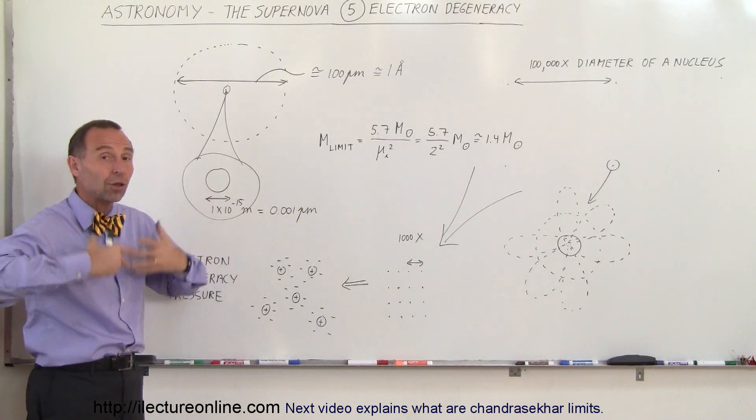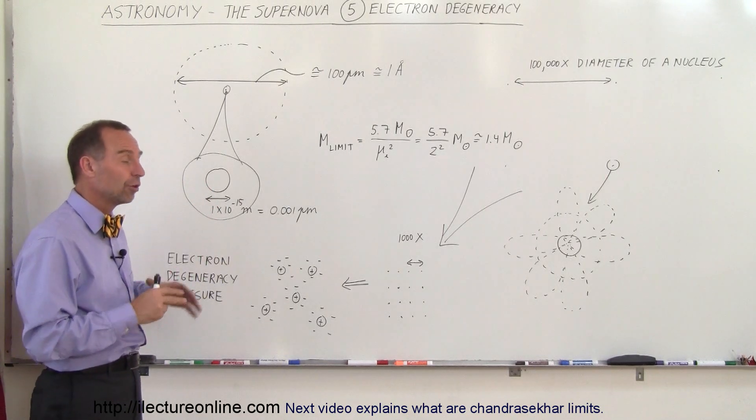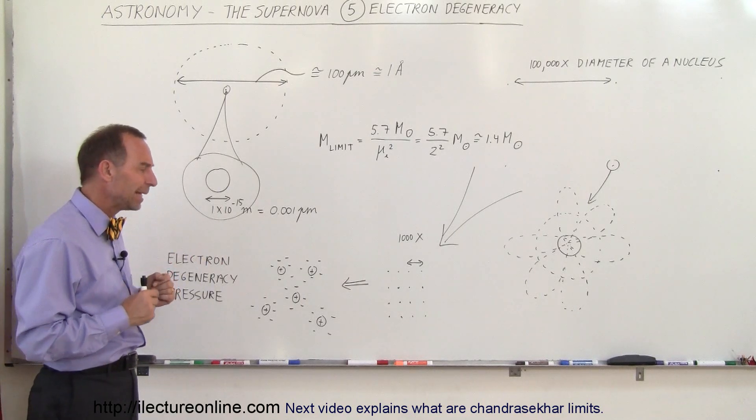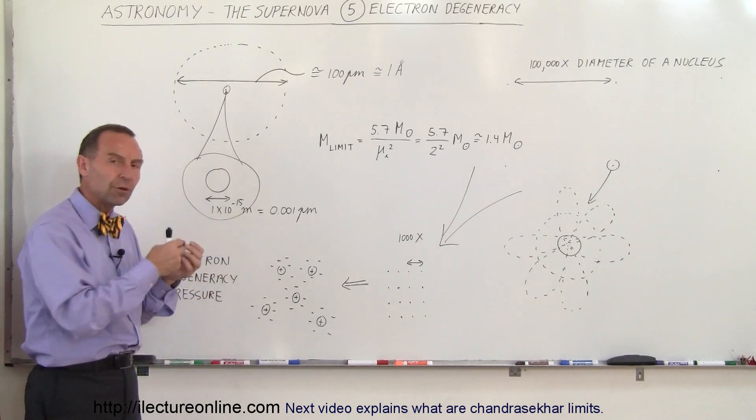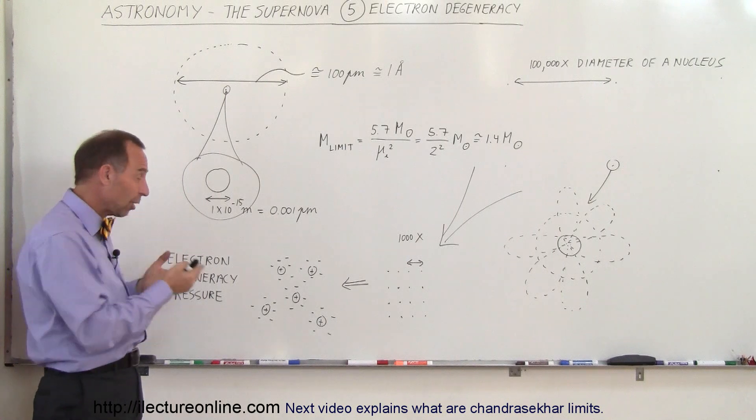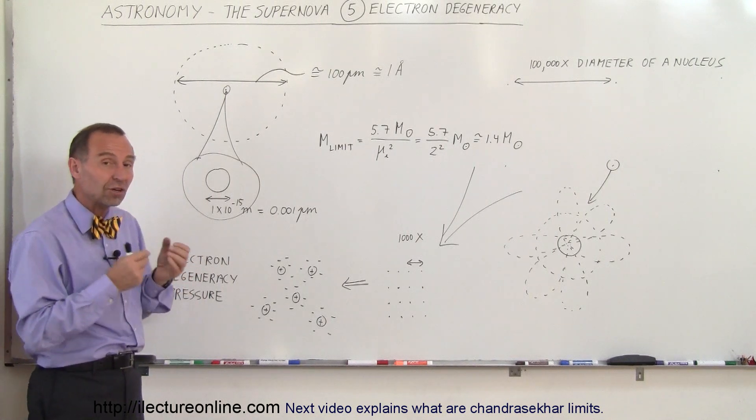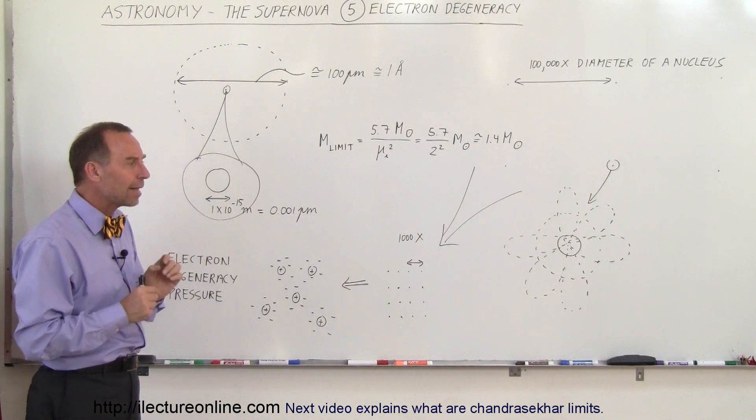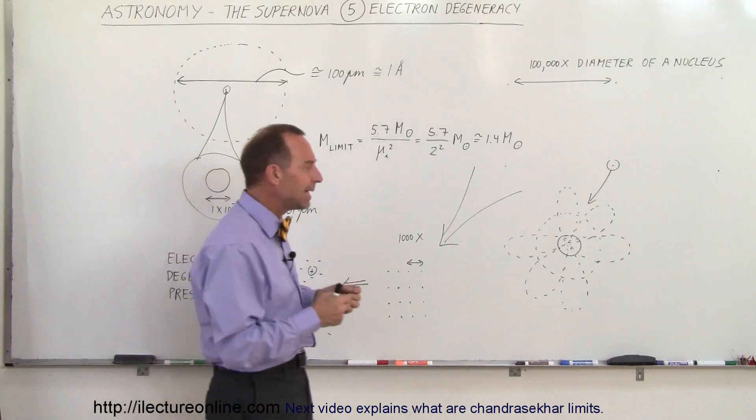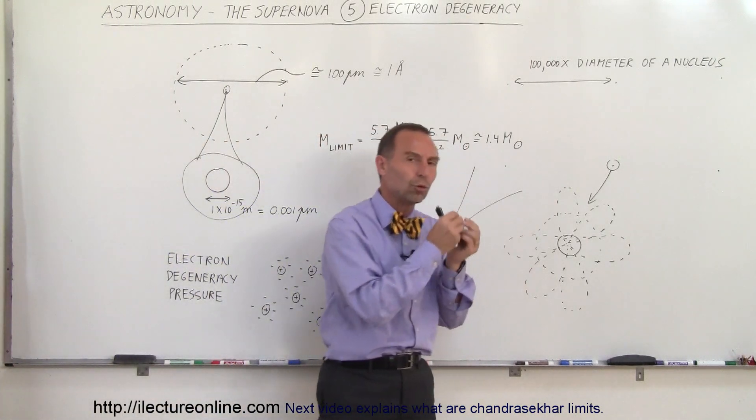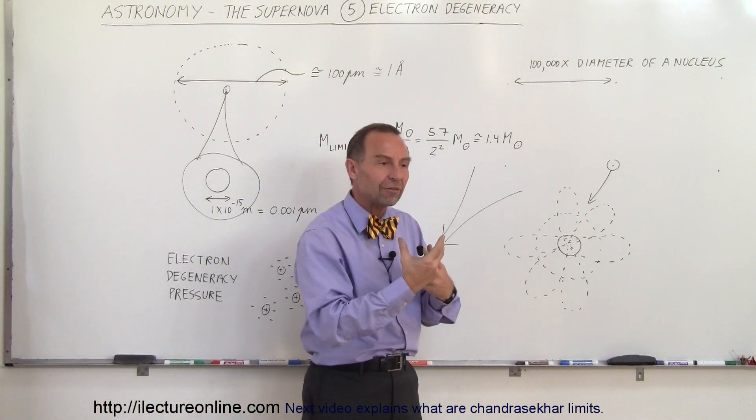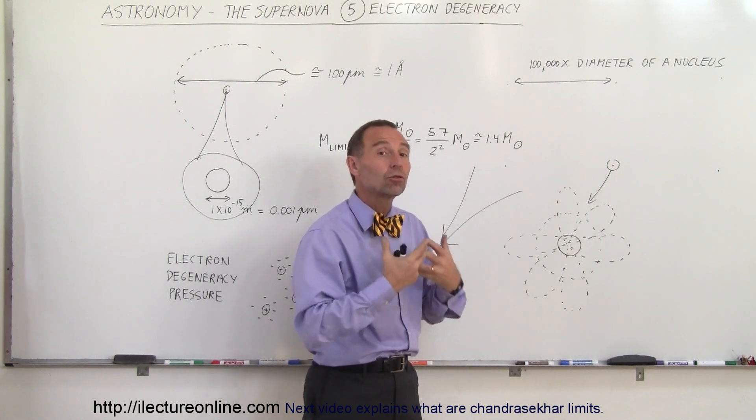So the balance is kept not by the thermal energy inside the white dwarves, but by electron degeneracy. It's not exactly the repulsive forces between the electrons, because that's not really what produces the electron degeneracy pressure. What's really going on is that electrons are bound by nature to exist in certain orbitals, in certain energy levels, based upon the Pauli exclusion principle.